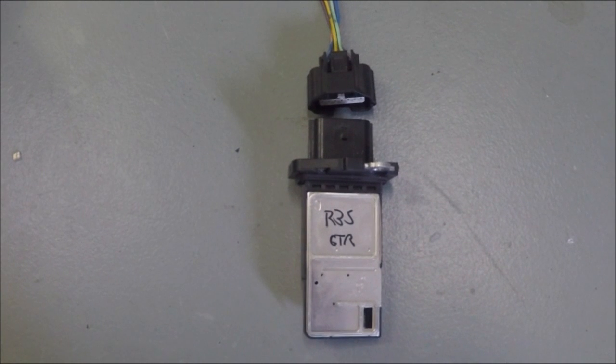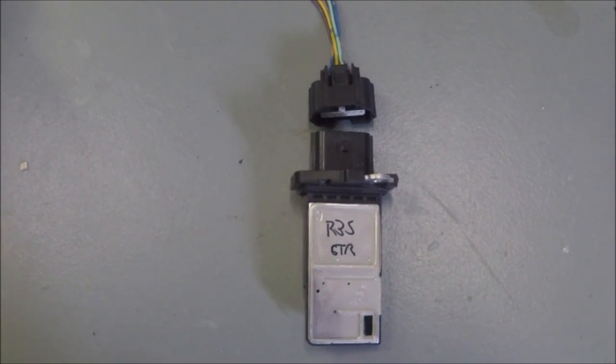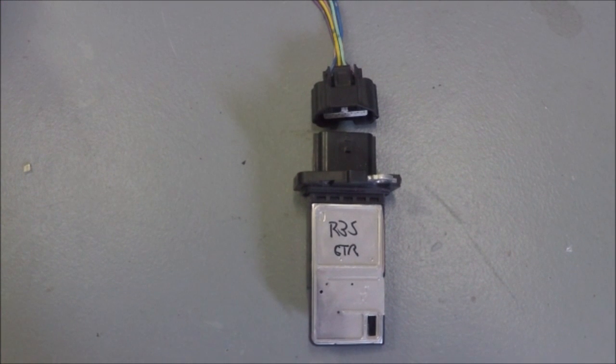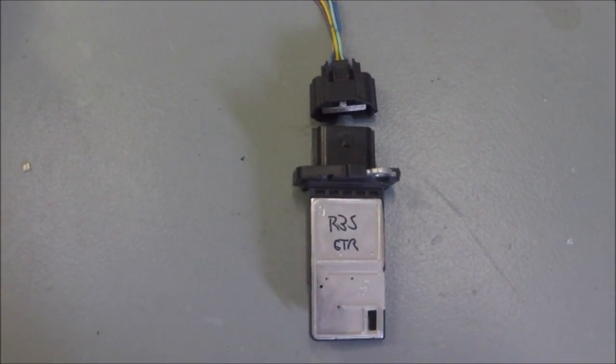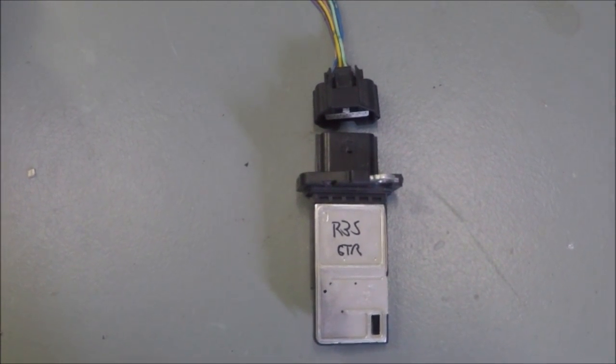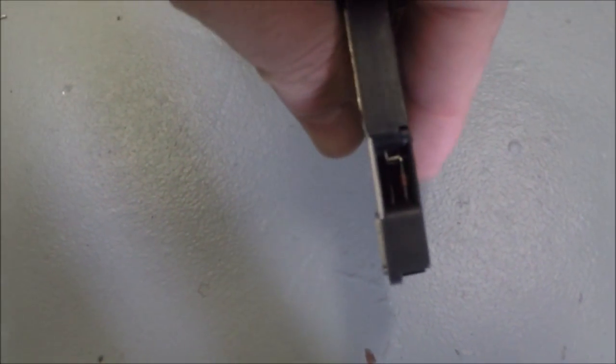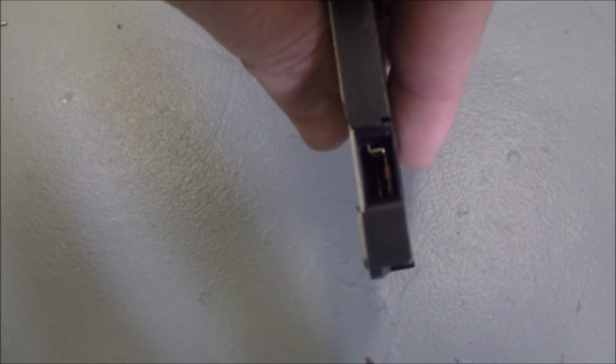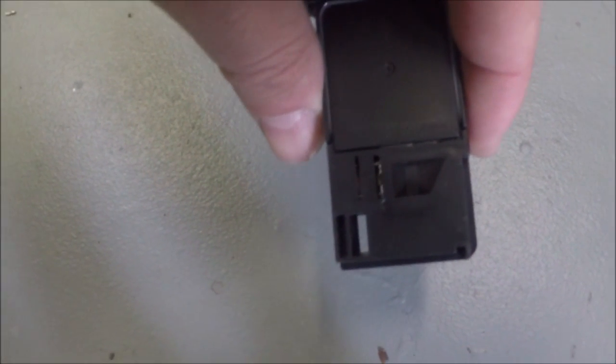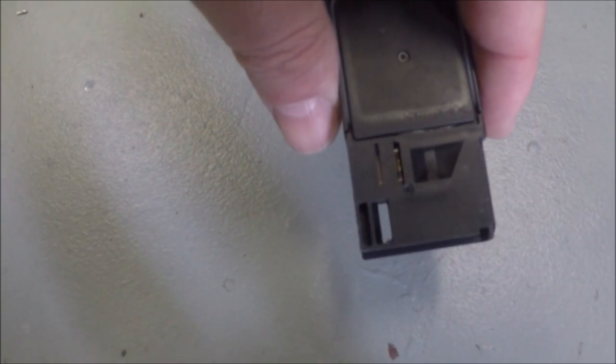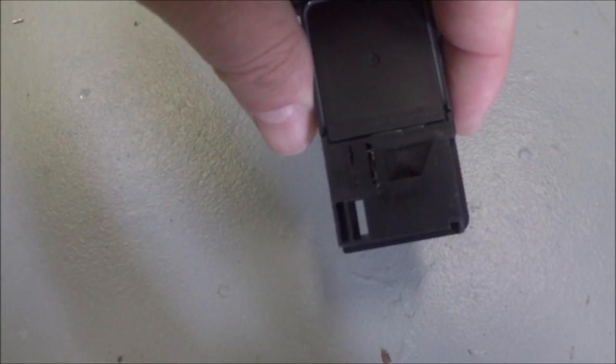Here we have an R35 GTR airflow sensor with a pigtail. The pigtails aren't readily available from Nissan but can be sourced from other vehicles. The airflow meter itself is a slot style sensor. These are used on newer model Nissans. What they use is a slot which is located in the front here. The airflow meter goes in and then out the sides where there is a vent. What this causes is for the airflow to pass through the sensor with minimal effects of reversion.